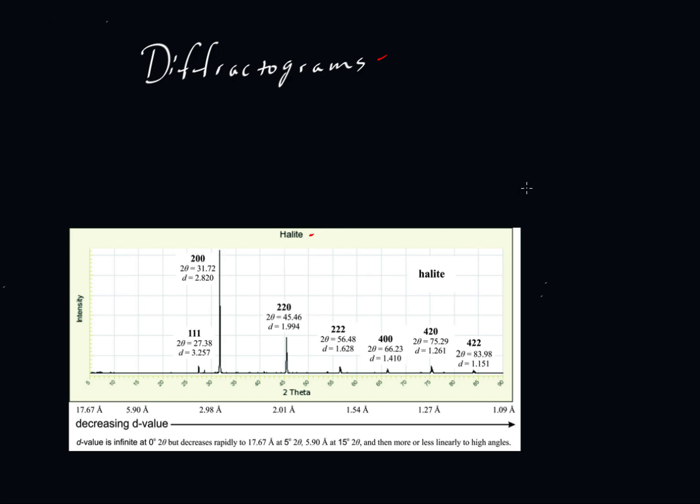So halite has been set up in an x-ray diffractometer. We've bombarded with x-rays, as we illustrate in another video, and we generate these peaks based on the d-spacings between the atoms and the halite structure. And we plot, here we have a plot of intensity versus 2 theta. So 2 theta has to do with the angle of reflection, and the intensity is just how much x-ray energy is being reflected off these various planes.